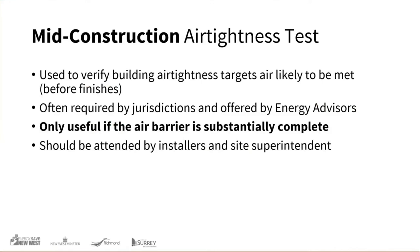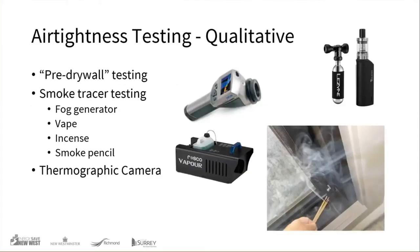On air tightness testing: this generally isn't something the builder or designer undertakes. The energy advisor or energy modeler is the one handling this side of testing, simply using a fan to measure airflow in and out to get your ACH. Before the final test, we have the ability to do a mid-construction air tightness test. It's mandated or incentivized in some cities to get first few buildings tested mid-construction. It's only useful when basically complete — windows and doors in, lockup, exterior sheathing membrane installed, or before drywall if using an interior approach.